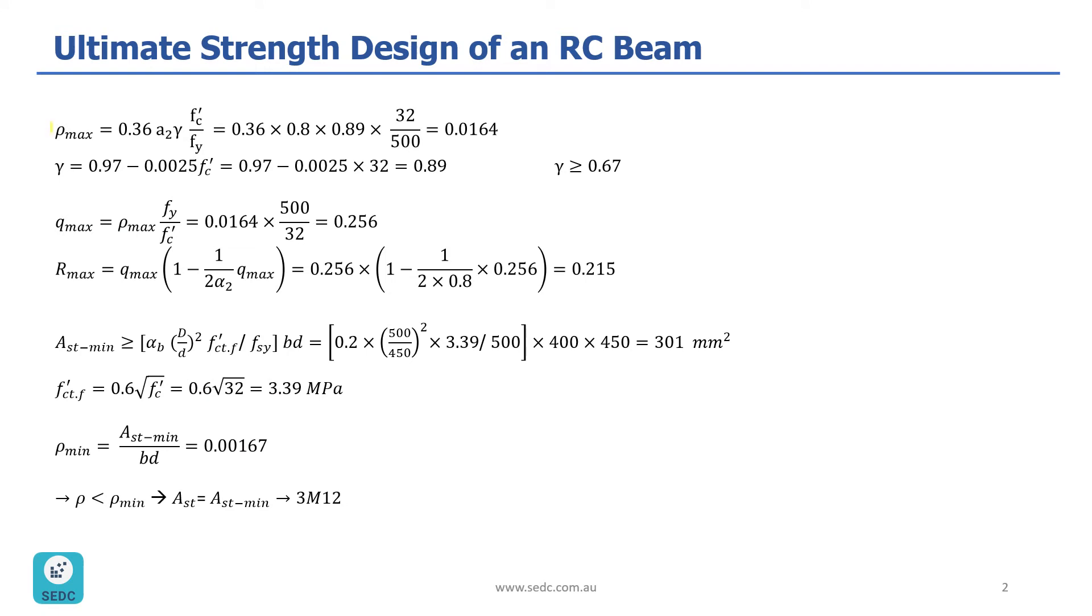Now, we need to calculate Rho max, which is equal to 0.36 times A2, which is calculated before as 0.8, and Gamma, which we need to calculate based on this formula, times F prime C, which is 32, divided by Fy. So, Gamma is 0.97 minus 0.0025 times F prime C, which is going to be 0.89, and it also needs to be larger than or equal to 0.67, which is okay.